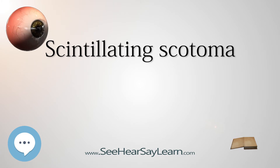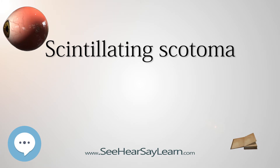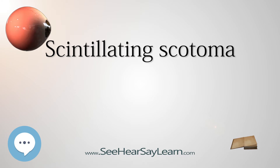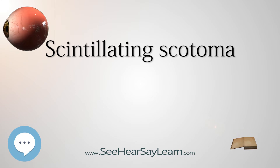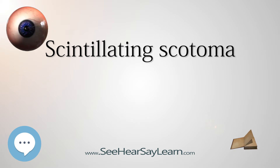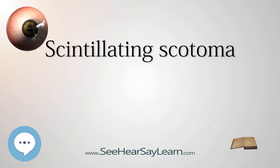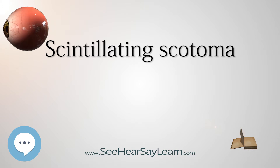Signs and Symptoms: Many variations occur, but scintillating scotoma usually begins as a spot of flickering light near or in the center of the visual field, which prevents vision within the scotoma area. The affected area flickers but is not dark. It then gradually expands outward from the initial spot.